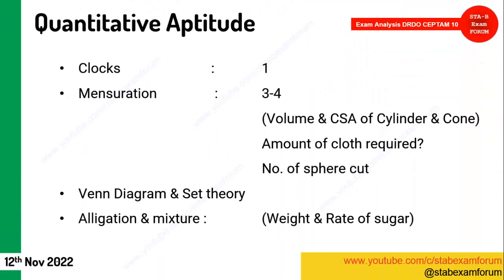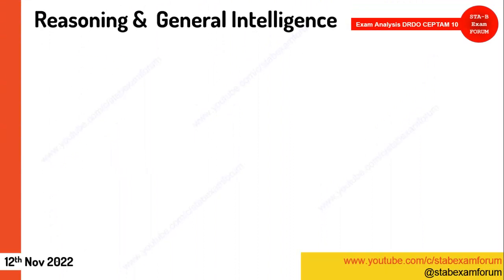In Quantitative Aptitude, a clock question appeared — students found it difficult. Mensuration had three to four questions: volume and curved surface area of cylinders and cones were asked. A question on how much cloth is required and how many smaller spheres can be obtained from a bigger sphere. A few questions on Venn diagrams and set theory. Alligation and mixture questions on weight and rate of sugar — given a ratio, find the rate after mixing.